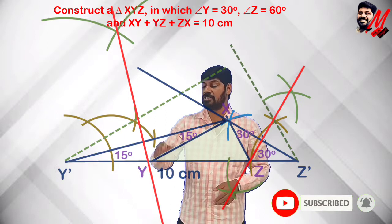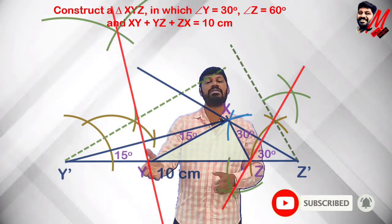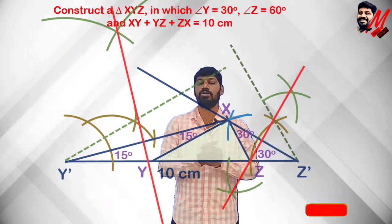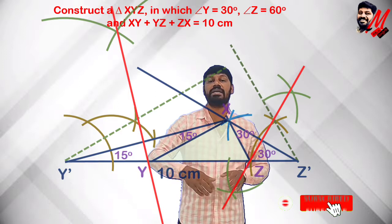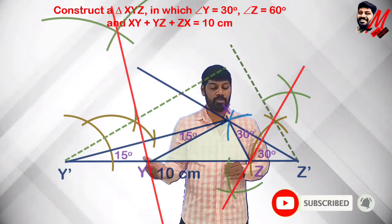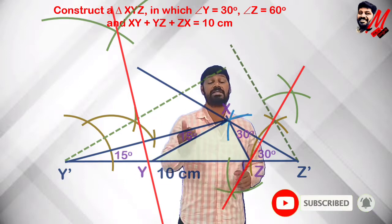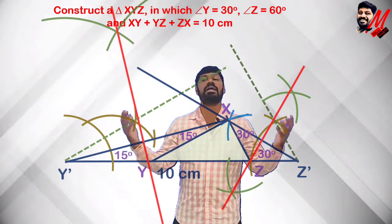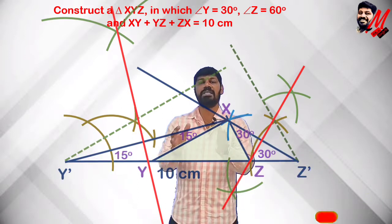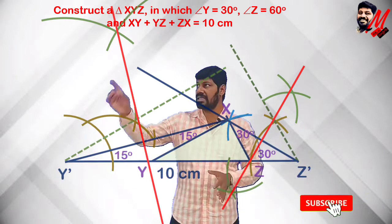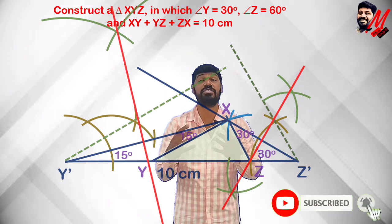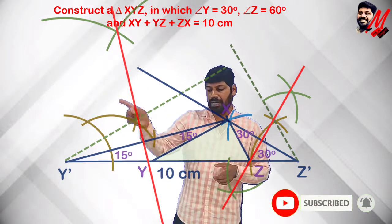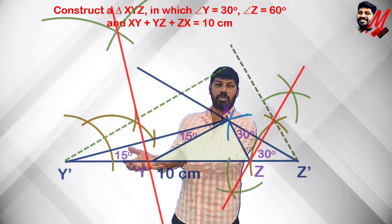In the resulting triangle XYZ: angle Y = 30°, angle Z = 60°, and XY + YZ + ZX = 10 cm. So this triangle satisfies all the given conditions. This completes our construction using the perpendicular bisector method.